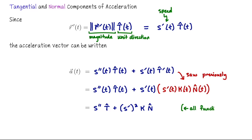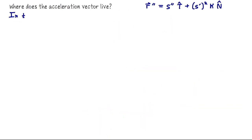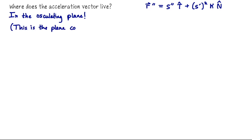The big conclusion is that the acceleration vector can be written as a vector sum of a scaled version of T̂ plus a scaled version of N̂. This tells us the acceleration vector must live in the osculating plane — the plane containing both T and N, whose normal vector is B.